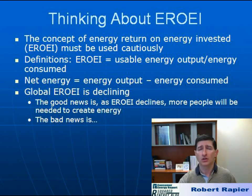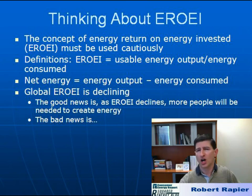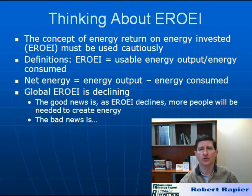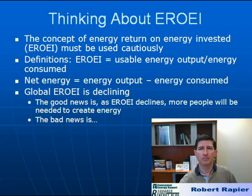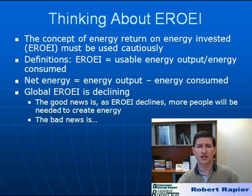Some of the caveats you need to be aware of: first of all, global EROEI is declining. 100 years ago it's often said that it would take 1 BTU of energy to produce 100 BTUs of oil. That has declined as we've had to drill deeper wells, move offshore, produce unconventional oil, biofuels — all those are lower and the EROEI is going down. The good news is this will potentially be a job creator, because it will take more people to produce energy as EROEI declines, and I'll get to that on the next slide.